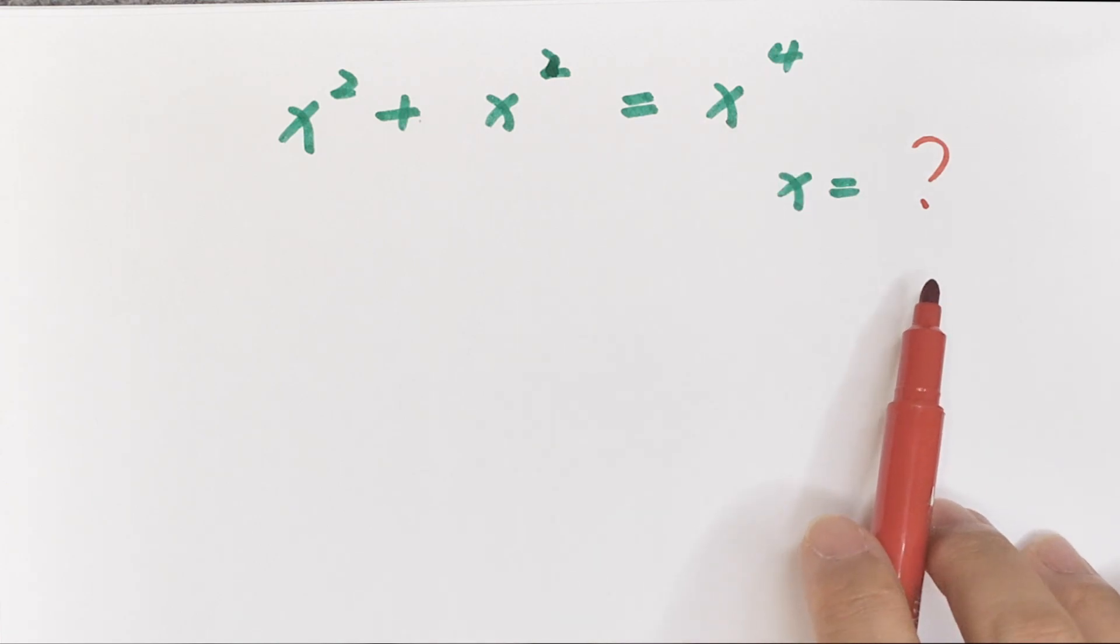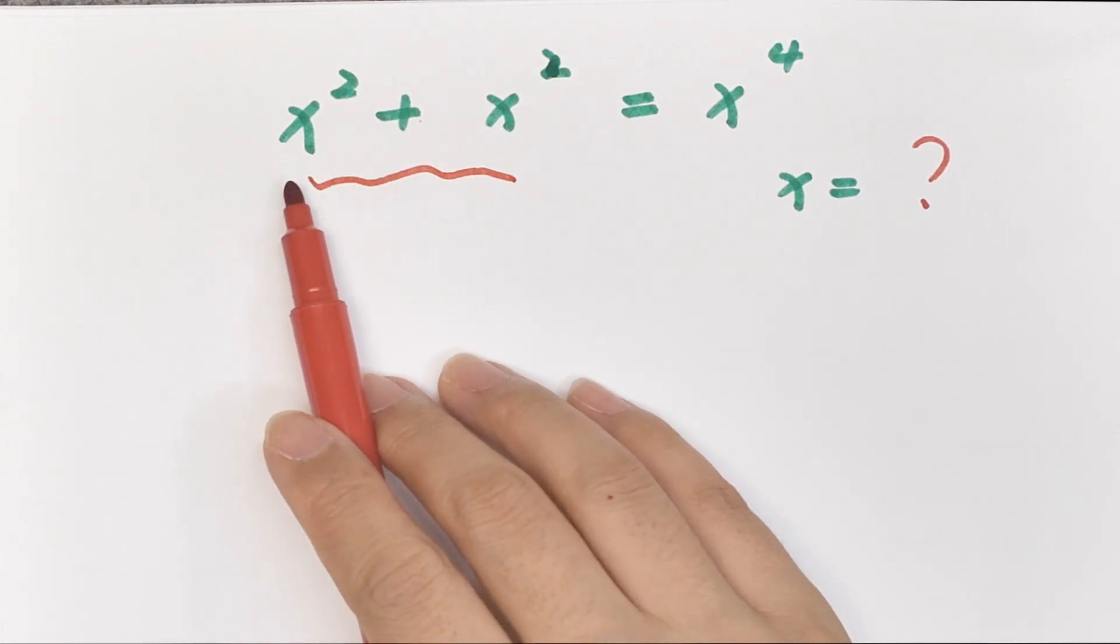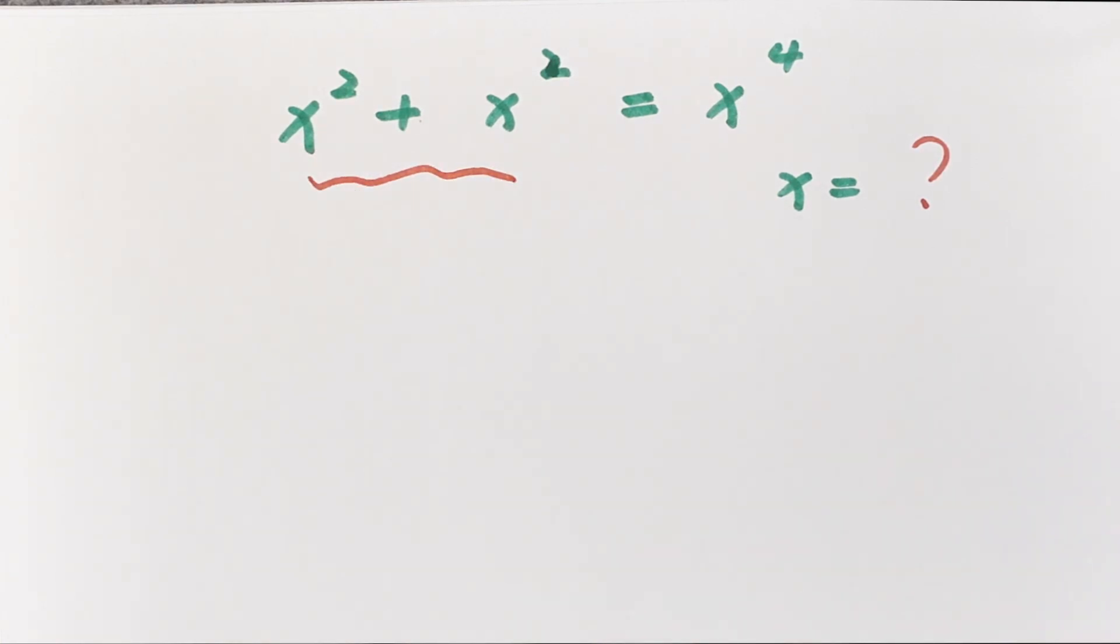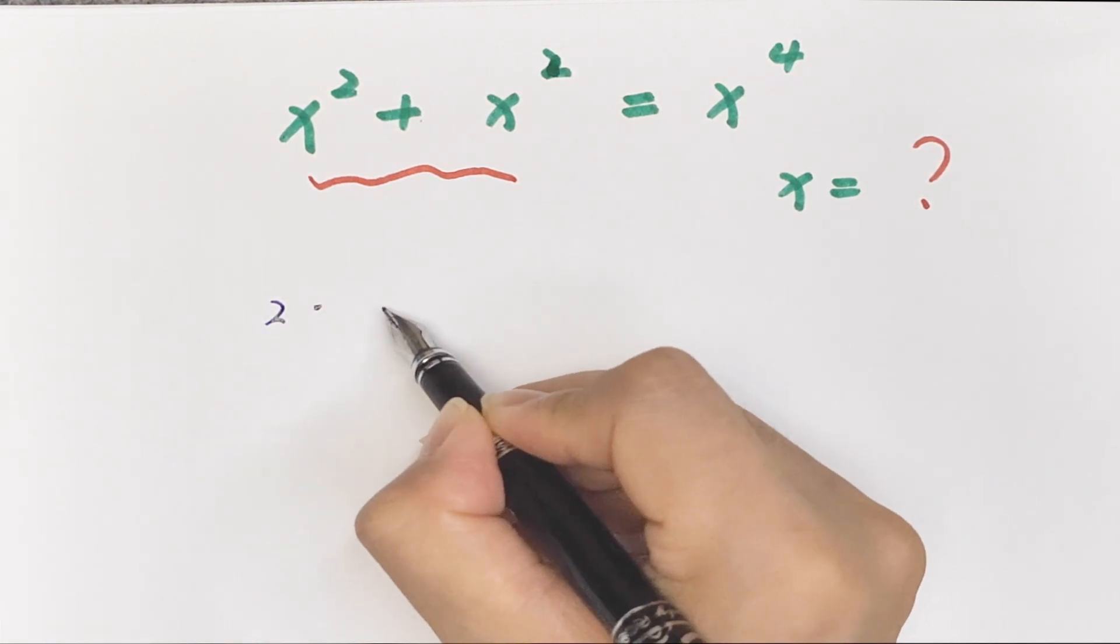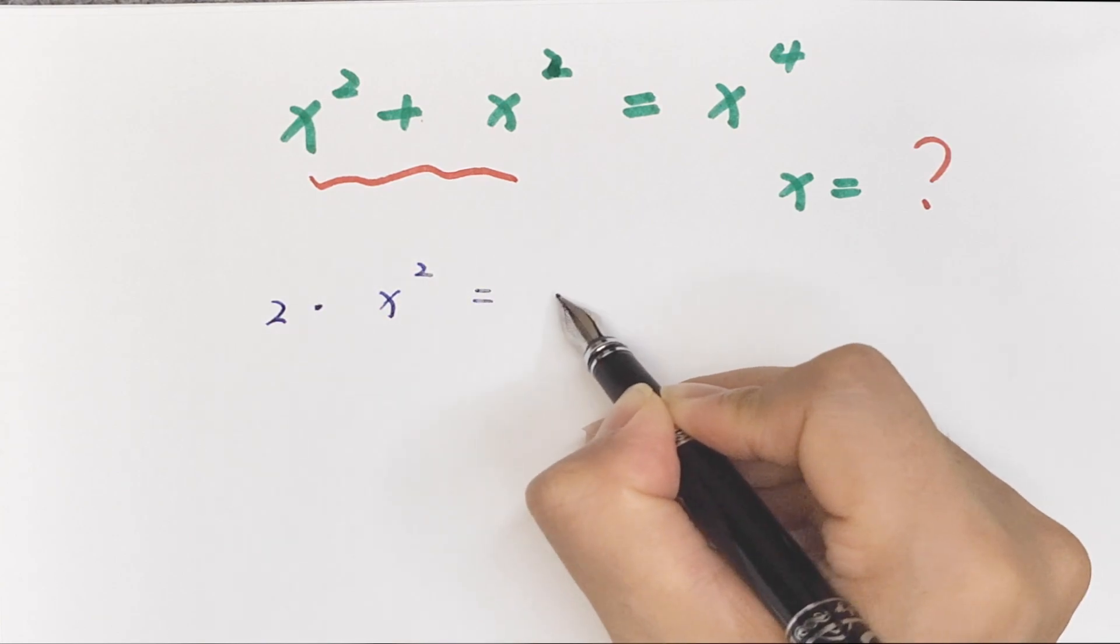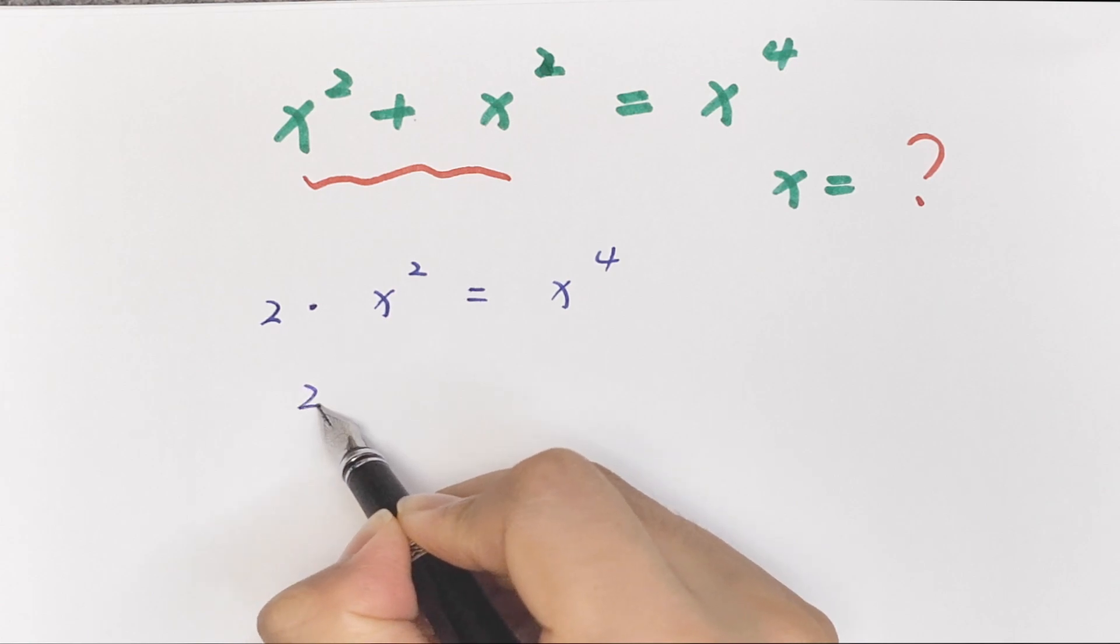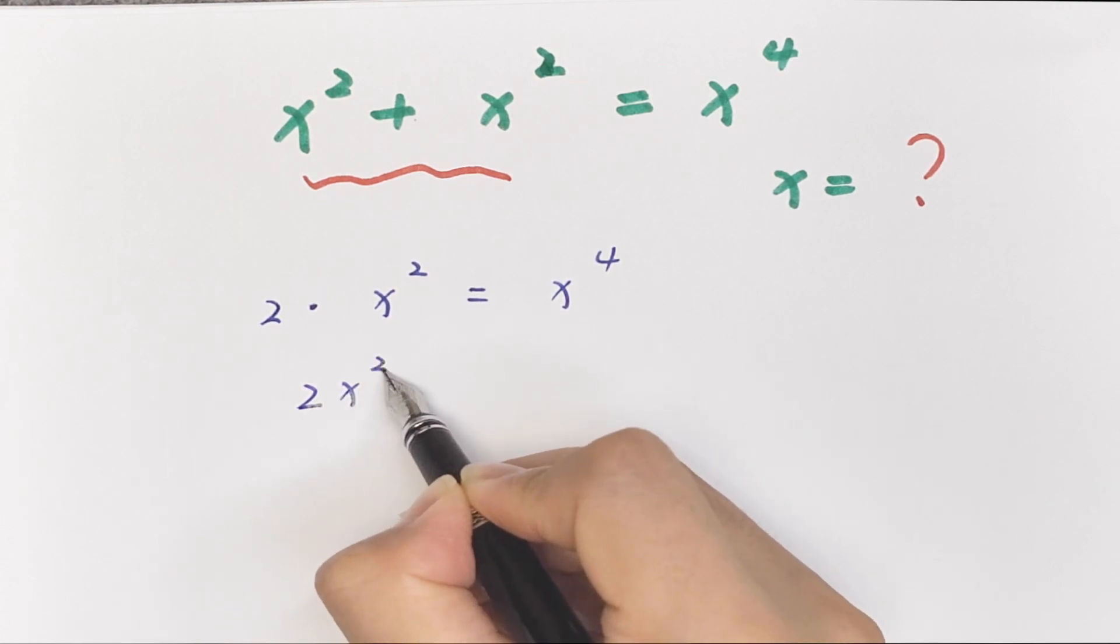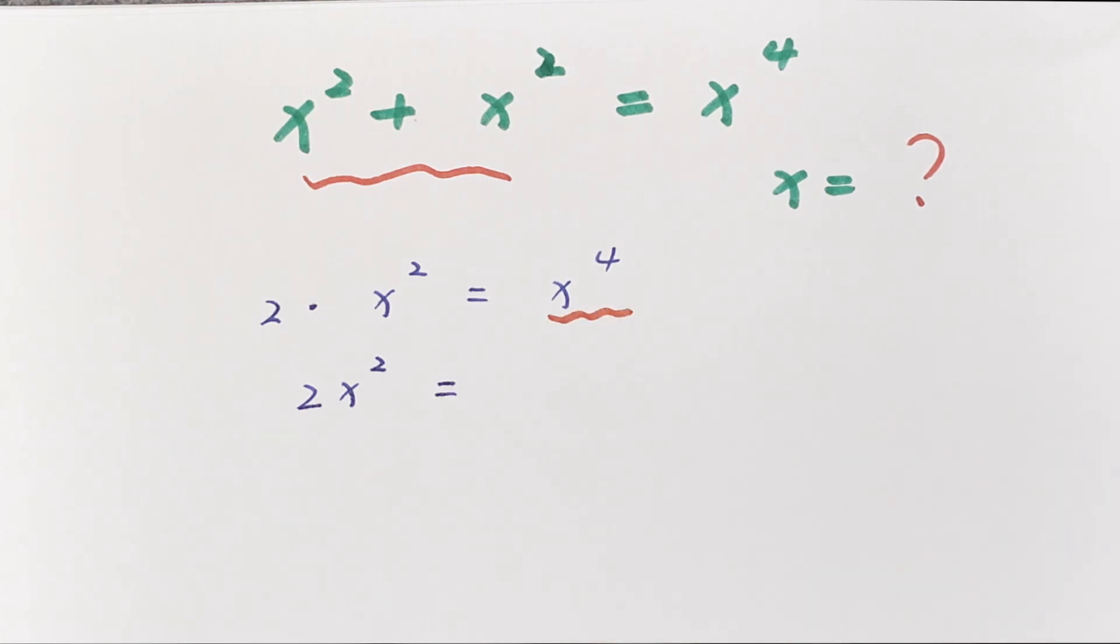First, the left side we have 2x squared, so it will be 2 times x squared equals x to the power of 4.